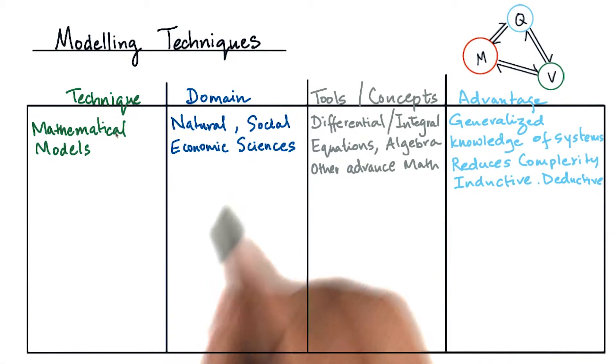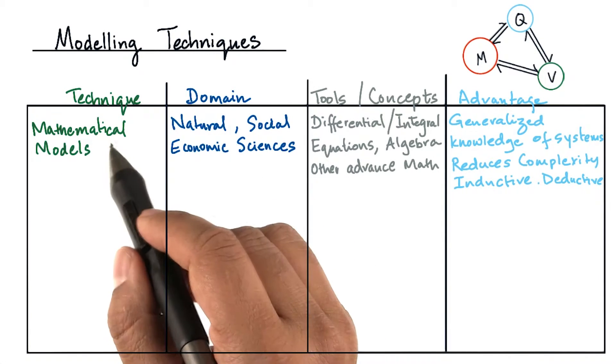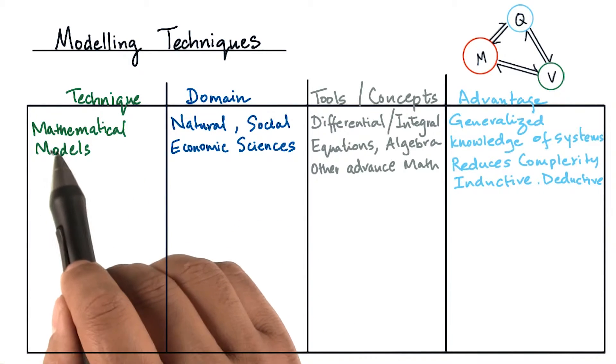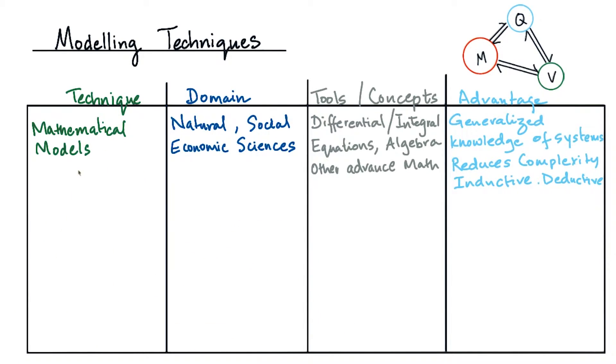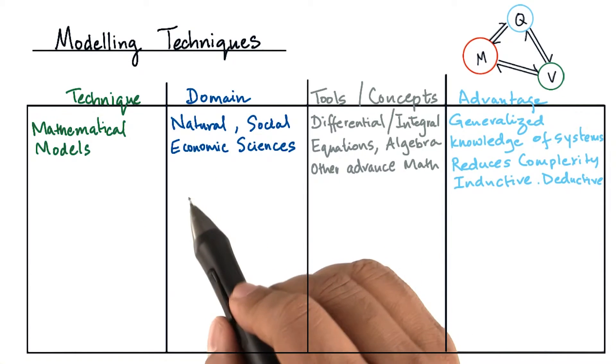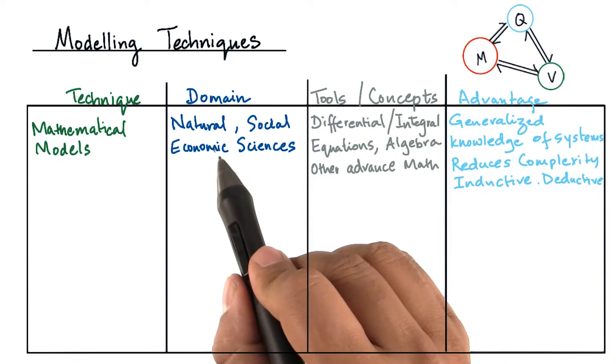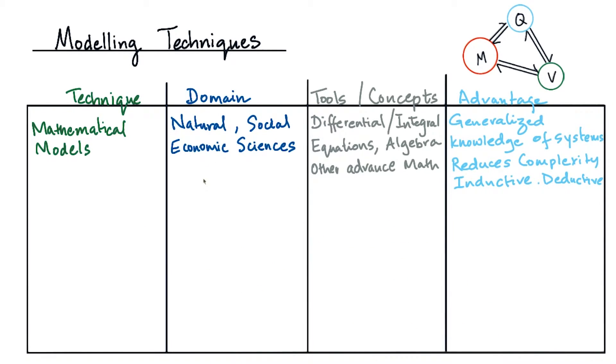Let's look at some of the modeling techniques in use. One of the first techniques that comes to mind is mathematical models. They are usually useful in domains such as natural, social, or economic sciences.